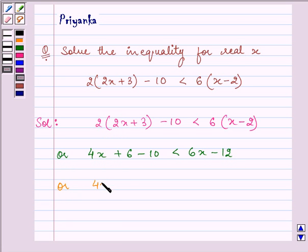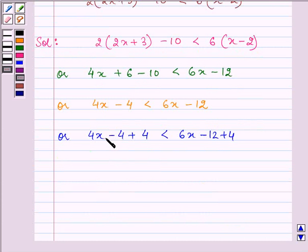On simplifying it further we have 4x minus 4 is less than 6x minus 12. On adding 4 to both sides we have 4x minus 4 plus 4 will get cancelled, is less than 6x minus 12 plus 4, and we have 4x is less than 6x minus 8.